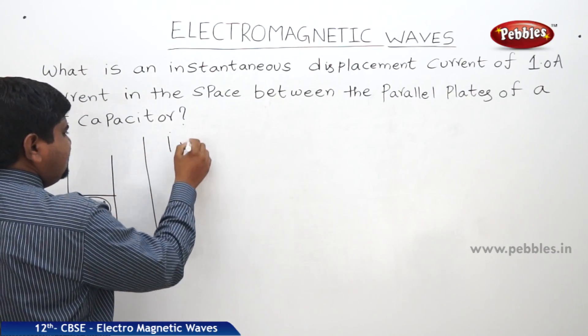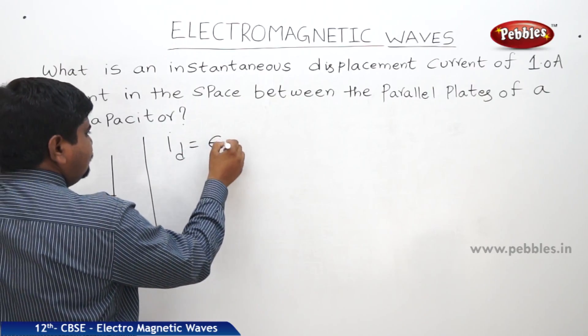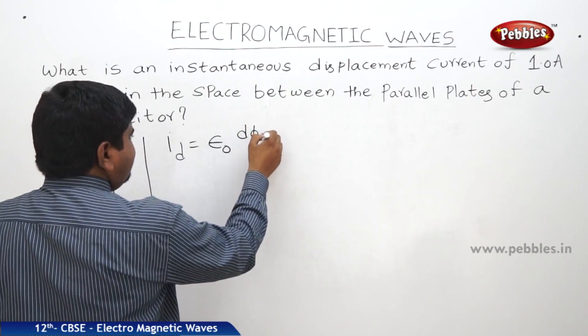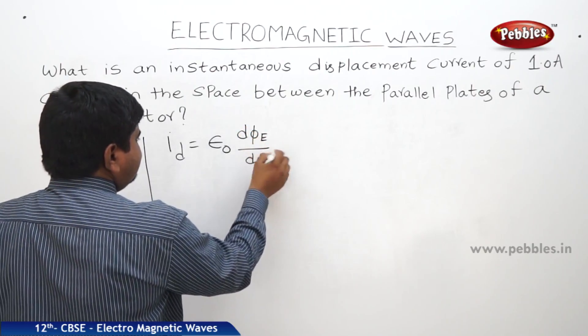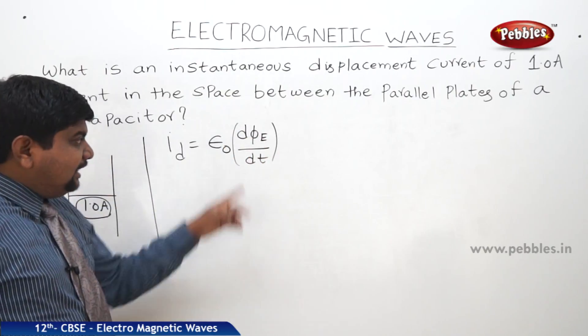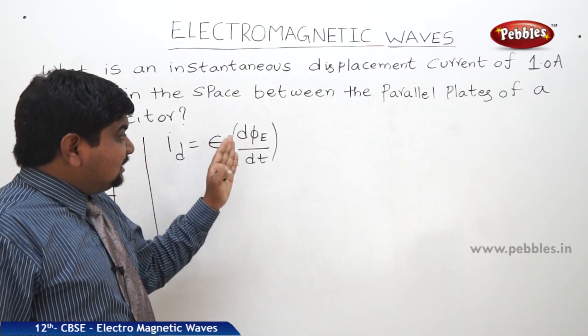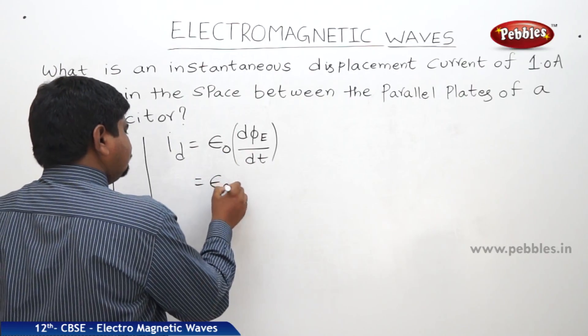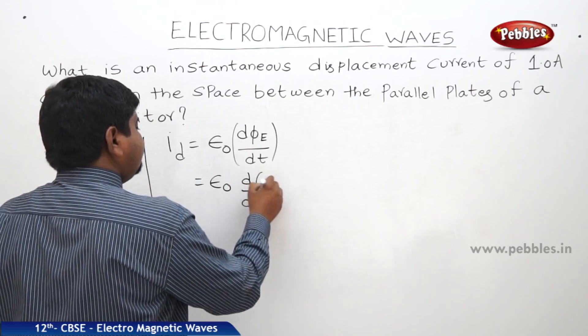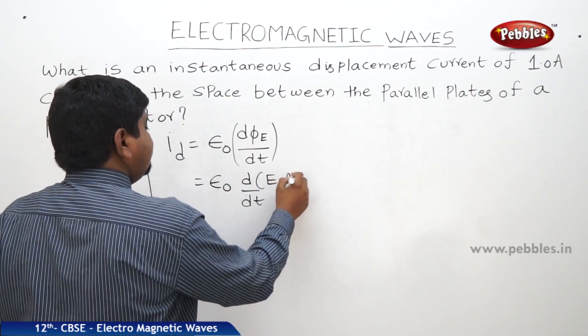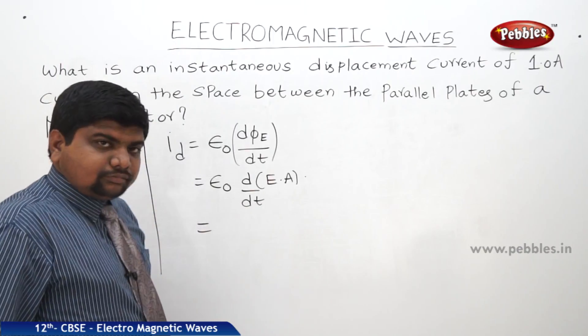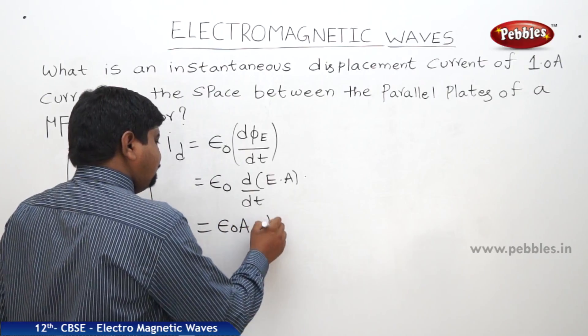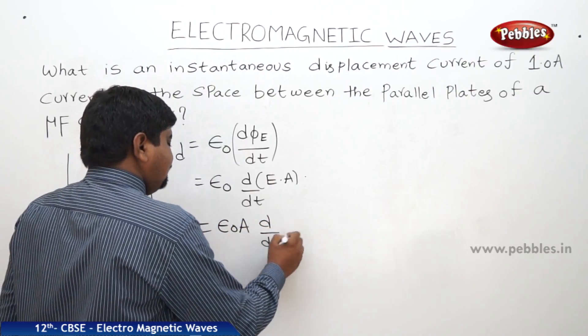We know that displacement current is equal to epsilon 0 into d phi E by dt. Phi E is electric flux. It is nothing but E into A. D by dt of E dot A.